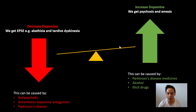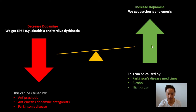On the other end of the seesaw, when we increase dopamine, we can potentially get psychosis or emesis — basically nausea or vomiting. This can be caused by the medicines used to treat Parkinson's disease, as well as alcohol or a number of illicit drugs, all of which can also increase dopamine.